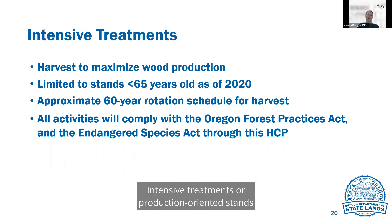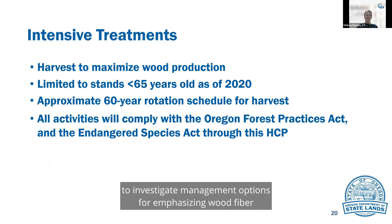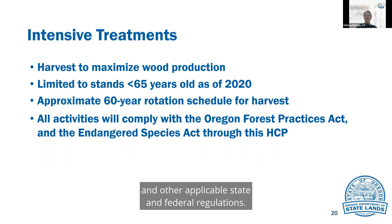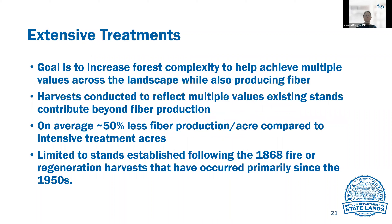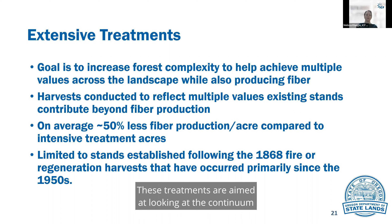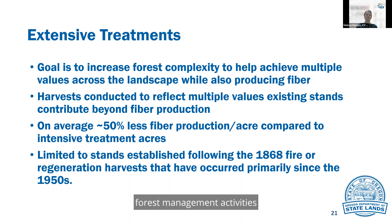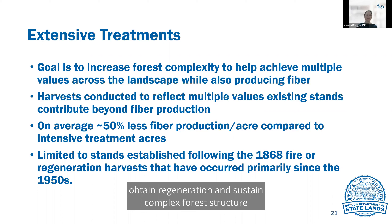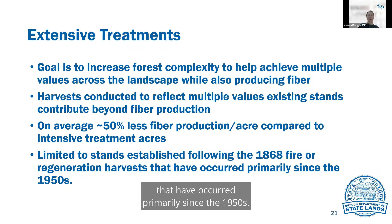Intensive treatments, or production-oriented stands, will be research treatments used to investigate management options for emphasizing wood fiber production at rotations of 60 years or longer. Harvest will be limited to those stands that are less than 65 years old as of 2020, and all activities will comply with the Oregon Forest Practices Act and other applicable state and federal regulations. Extensive treatments are aimed at looking at the continuum between intensive and reserves to find a way to perform forest management activities that can have multiple benefits. The goal of extensive treatment is to retain or create structural complexity while ensuring conditions exist to obtain regeneration and sustain complex forest structure through time. Extensive treatments will be limited to stands that were established following the 1868 fire or regeneration harvests that have occurred primarily since the 1950s. These treatments will have, on average, 50% less fiber production per acre compared to intensive.